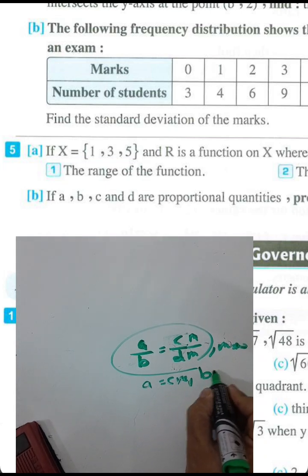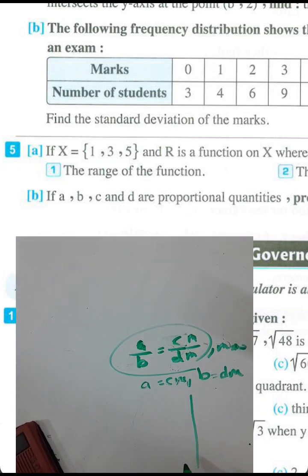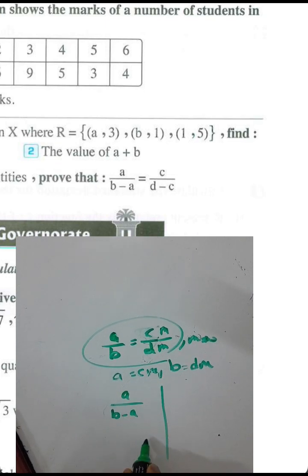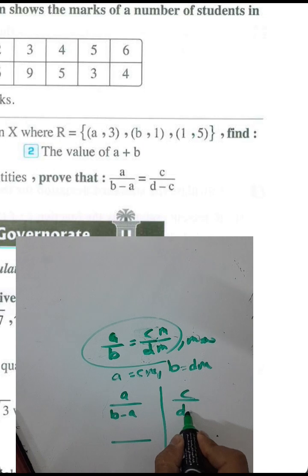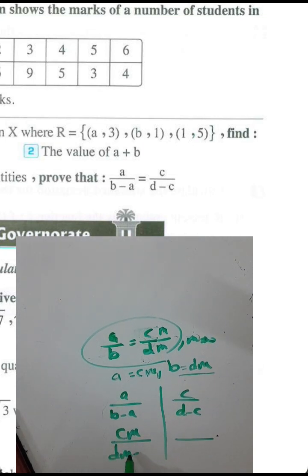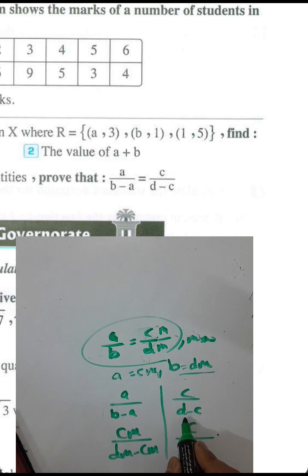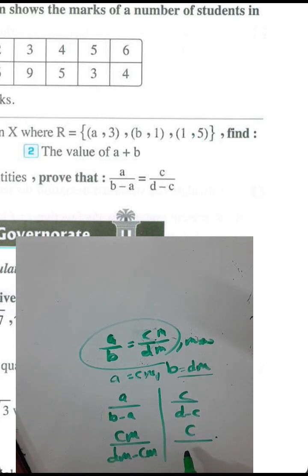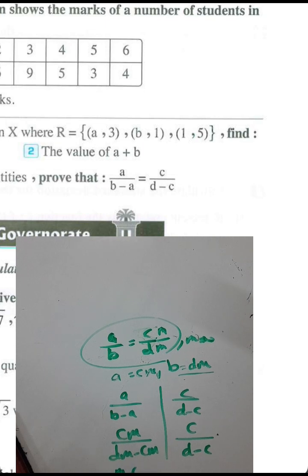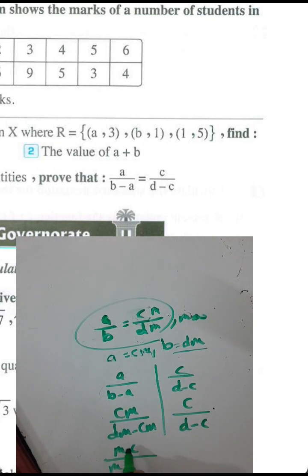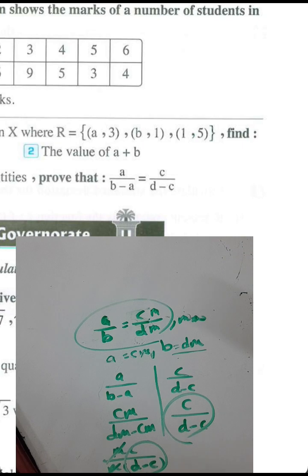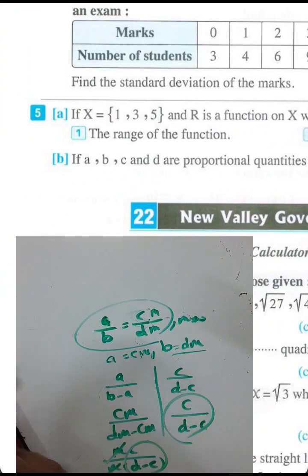Factoring m from the denominator on the left: c times m over m times (d minus c) equals c over (d minus c). Therefore the left-hand side equals the right-hand side equals c over (d minus c), which proves the identity. Note: if only a, b, c are given, you can solve using the first step with a over b equals b over c.